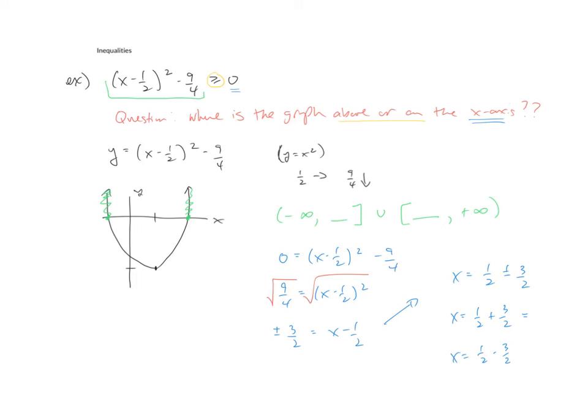the first one, 1 plus 3 is 4, 4 divided by 2 is 2. For the second one, we would have a negative 2 over 2, which is negative 1. So it appears this guy is my negative 1, and this guy is my 2.